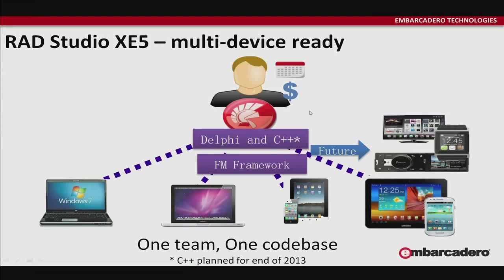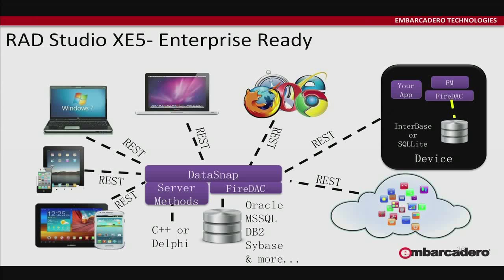Here we have our own framework where we wrapped the native controls and the native APIs called FM Application Platform. You write one code base in Delphi — or later this year in C++ — and you compile it for Windows, Mac, iOS, and Android, and next year for Windows Phone WinRT. It can connect to everything: databases, SQL databases, local databases, devices. It can connect to the cloud through REST services. We have a set of REST service components — if you want to get at something running in the world like Dropbox or whatever, that's three components for doing the authentication, connection, and passing commands to the REST service.